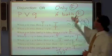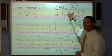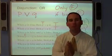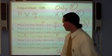That's a quick summary of disjunctions — they're only going to be false if both arguments are false. These are generally true statements.